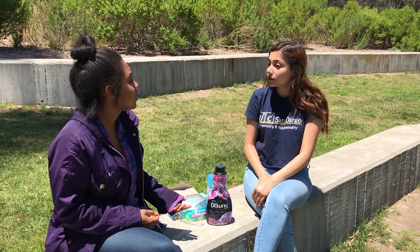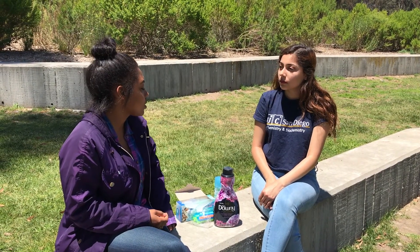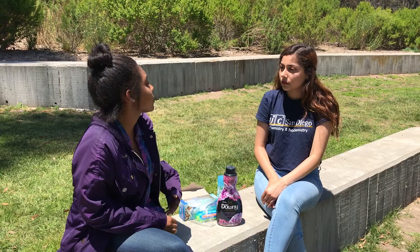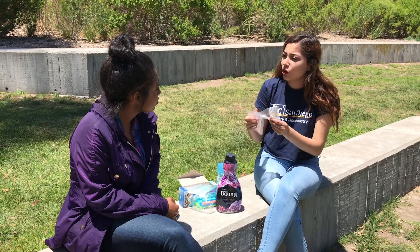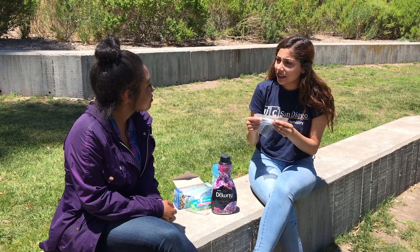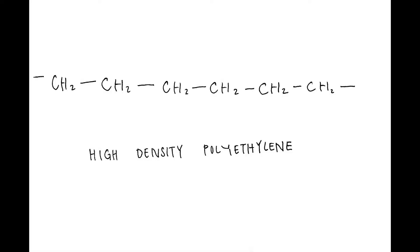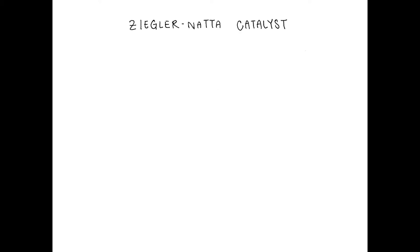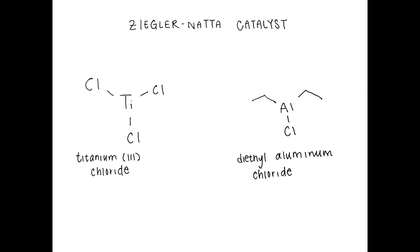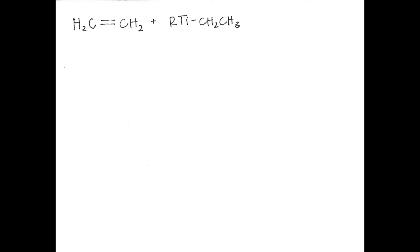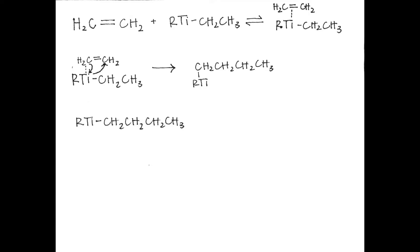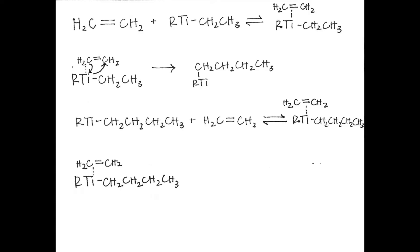High density polyethylene is a lot stronger than low density polyethylene and is used for materials like milk cartons and laundry detergent. So would this be like low density polyethylene then, like sandwich bags? You're exactly right. High density polyethylene is commonly produced through organometallic intermediates using the Ziegler-Natta catalyst, which is composed of a combination of titanium chloride and diethyl aluminum chloride. Ethylene is polymerized through a series of interactions and migrations with the catalyst complex to produce long linear chains.